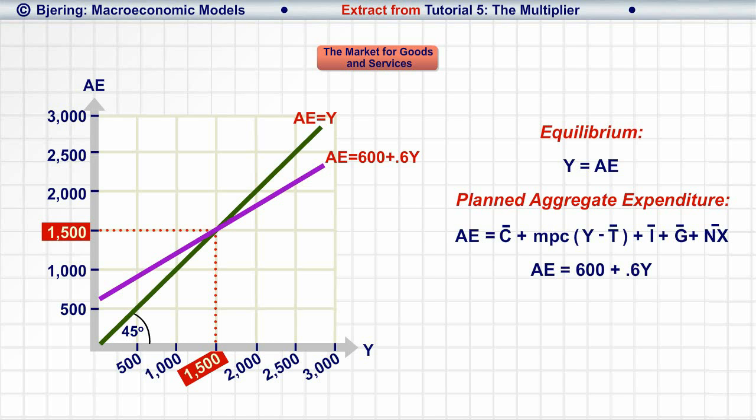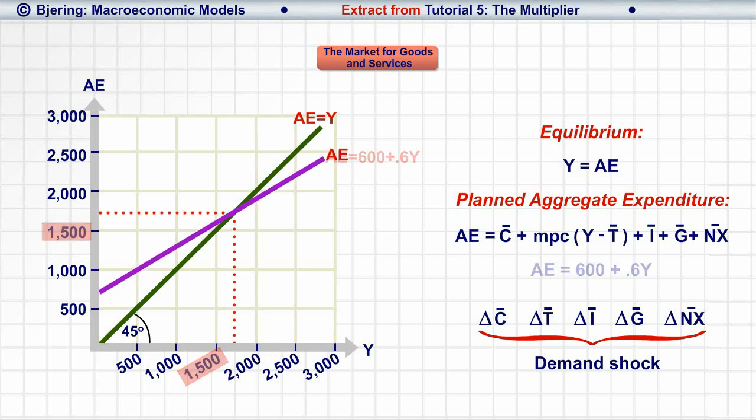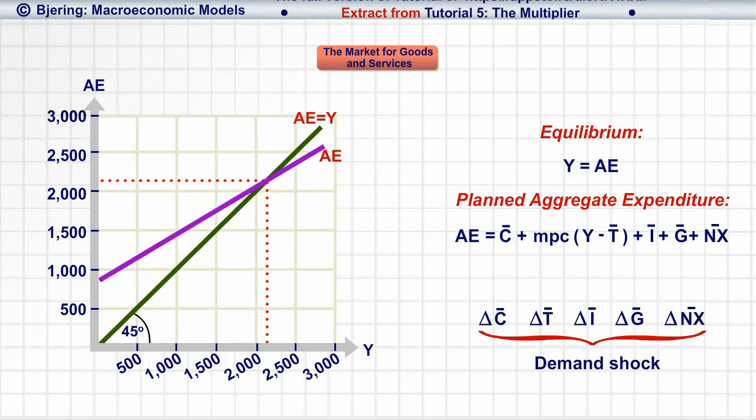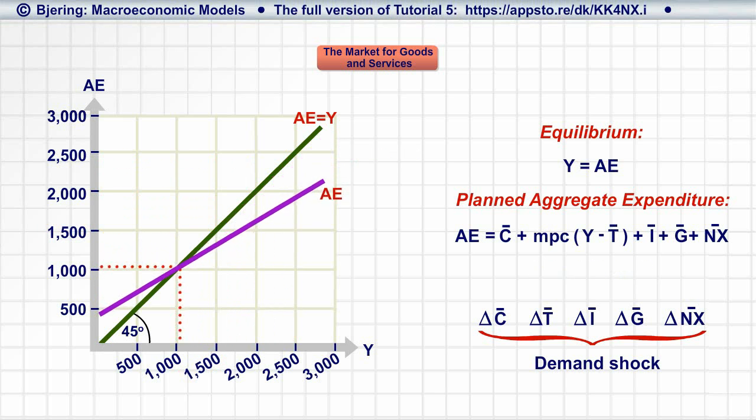Turning to the AE function's exogenous demand variables, we call a change in one or more a demand shock to the economy. Demand shocks affect the AE curve's intercept, shifting the AE curve vertically.